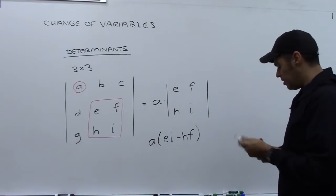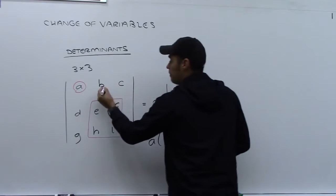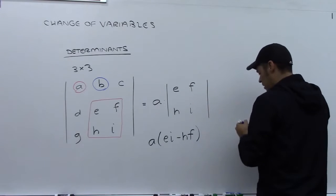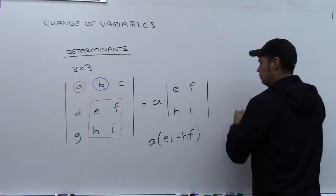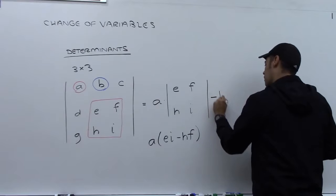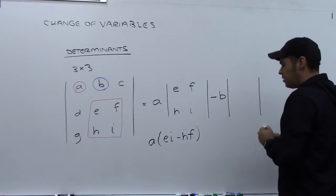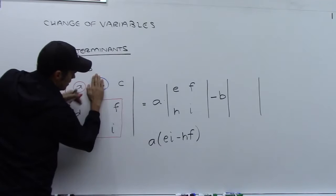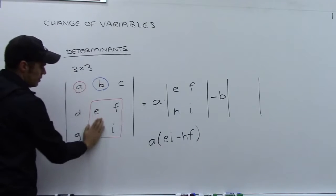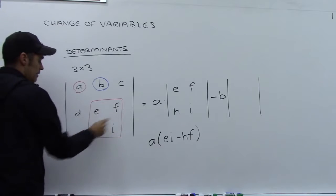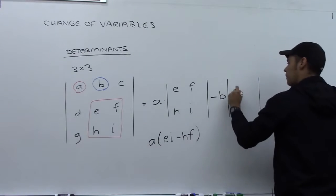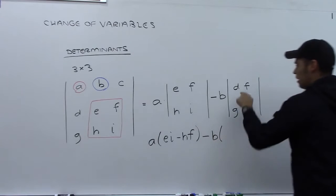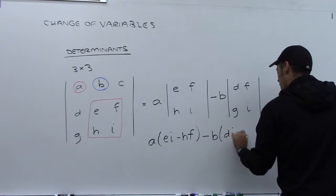That's the first step. The second step is that we do the same thing for B, but instead of putting positive B, we do the opposite: minus B times another determinant. For this determinant, we cover up B's column and row, and we're left with DFGI. So we have negative B times (DI minus GF).